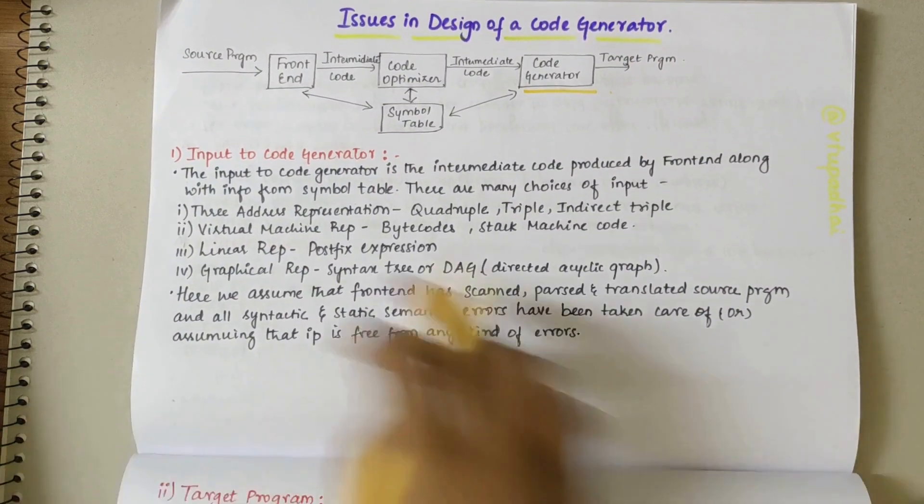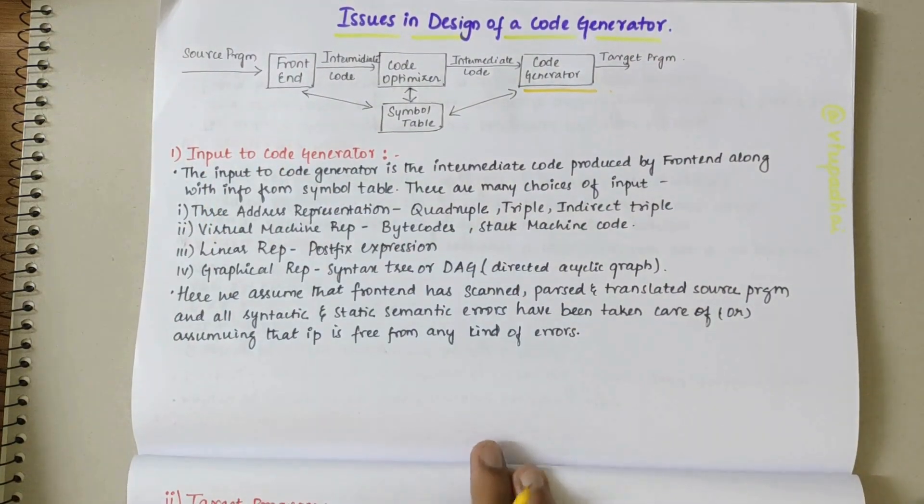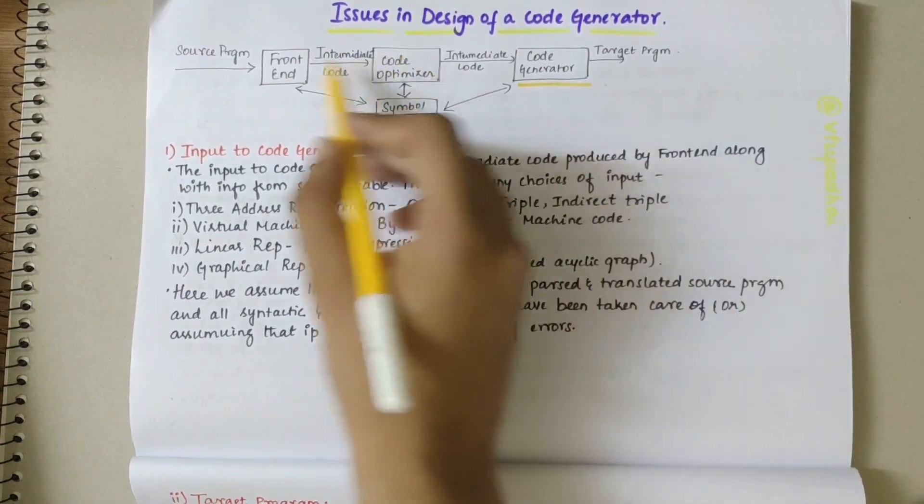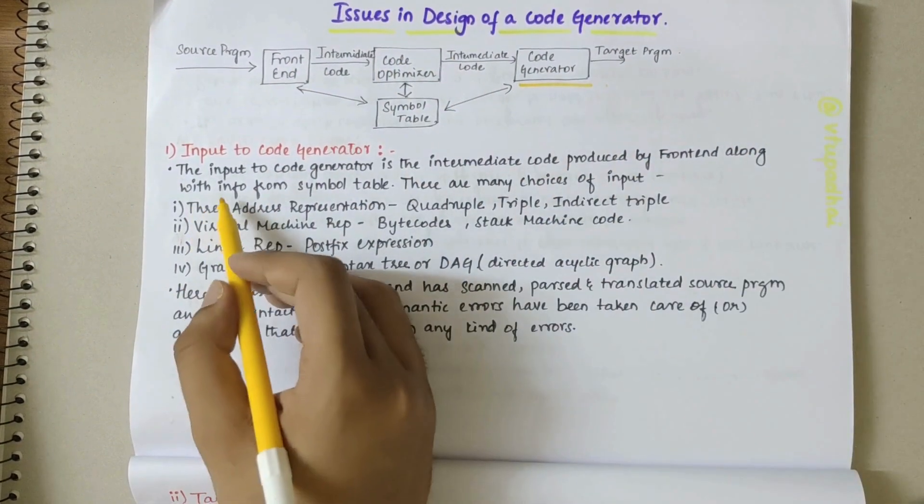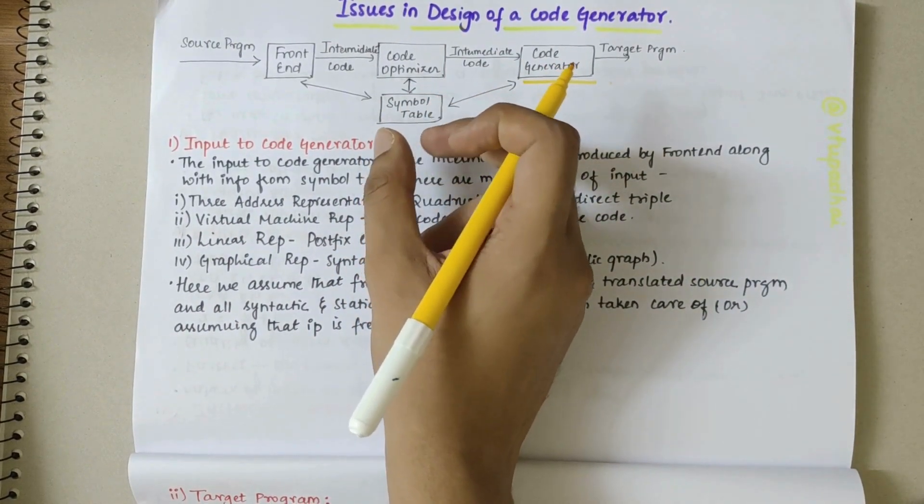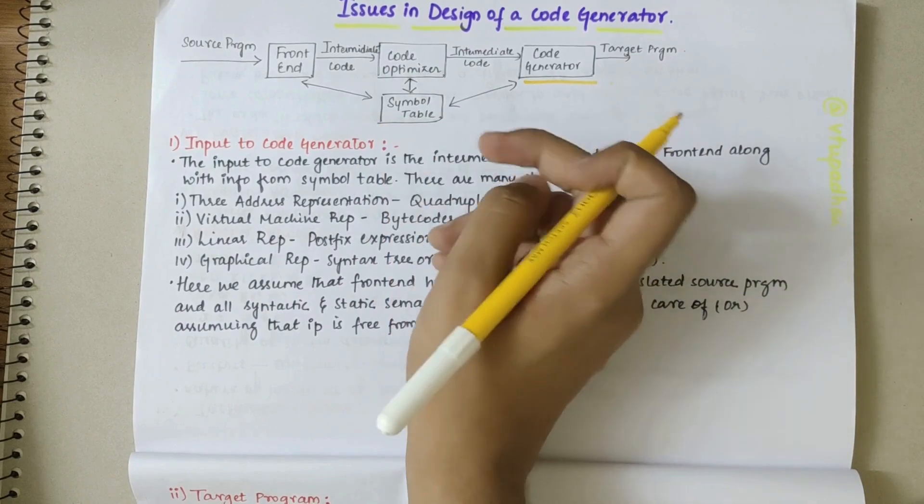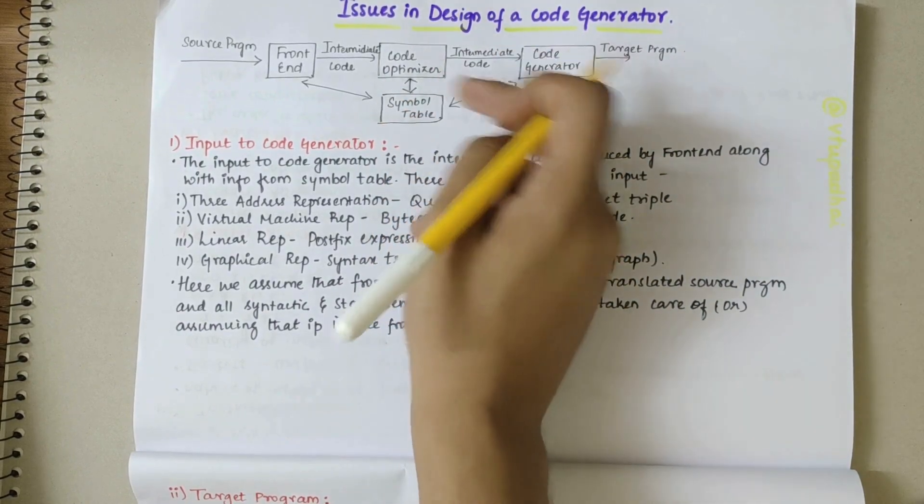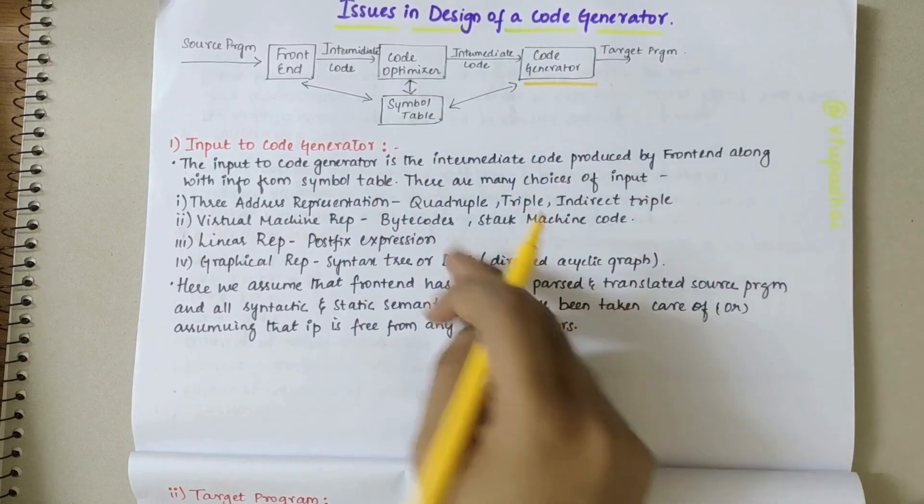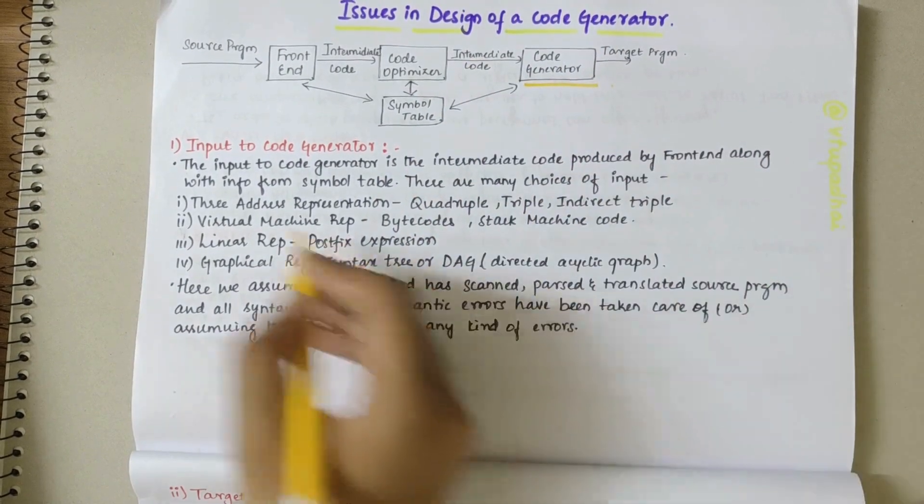The first issue deals with the input to code generator. The input is intermediate code produced by the front end along with info from the symbol table. The symbol table comprises of several information or the relative address. To obtain the output, the values in the symbol table are accessed. The input here could be of many choices.